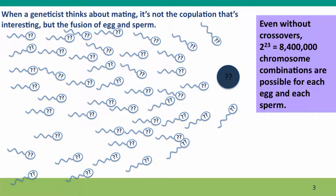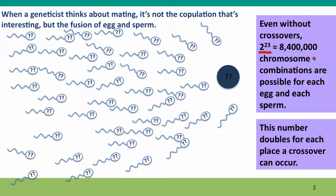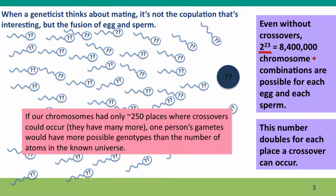Even if there were no crossovers, because we have 23 chromosomes, we have 2 to the 23rd, or more than 8 million combinations of chromosomes that we could put in our gametes. It's actually much more complicated than that because the number doubles for each place a crossover could happen. Even if we pretended there were only 250 places on the chromosomes where crossovers could occur, we would have more potential genotypes than the number of atoms in the known universe. So we can be confident that every gamete is genetically unique.